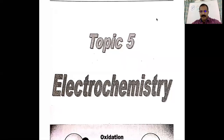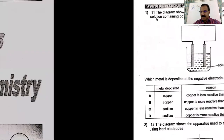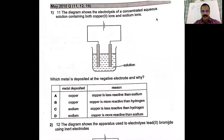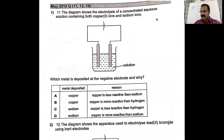Hi everyone. Today we are discussing how to answer multiple choice questions from electrochemistry. Let us start the first question. The diagram shows the electrolysis of a concentrated aqueous solution containing both copper ions and sodium ions. Which metal is deposited at the negative electrode and why?